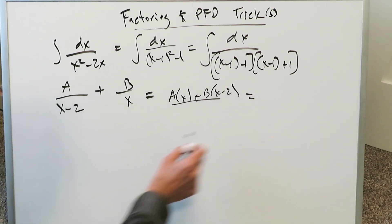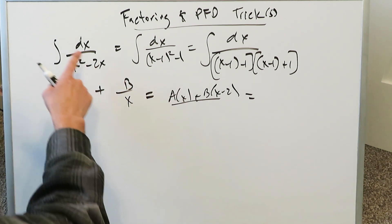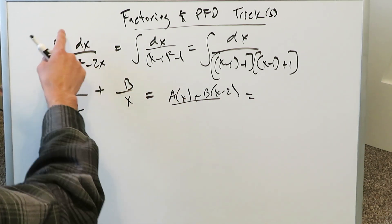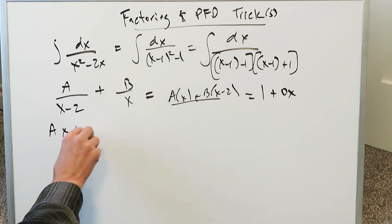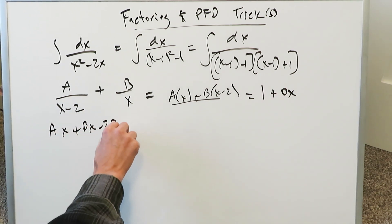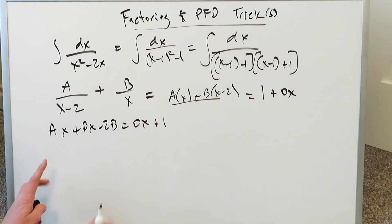And all of this will equal to what? It will equal to your original numerator, which is right here, an imaginary one with a placeholder 0x. We have ax plus bx minus 2b is equal to 0x plus 1. Combine the like terms.